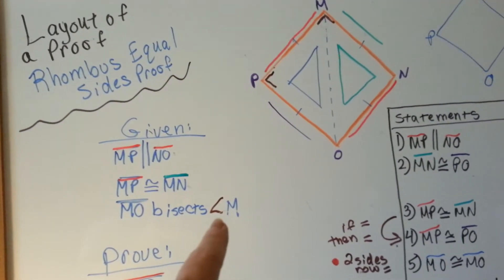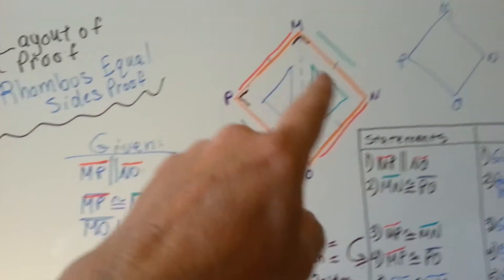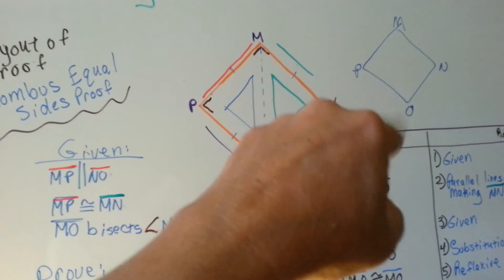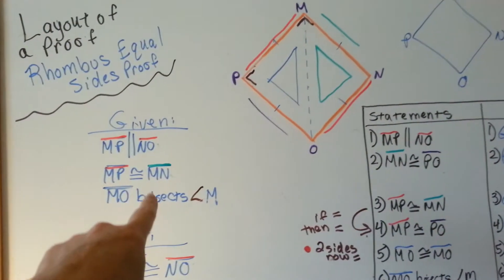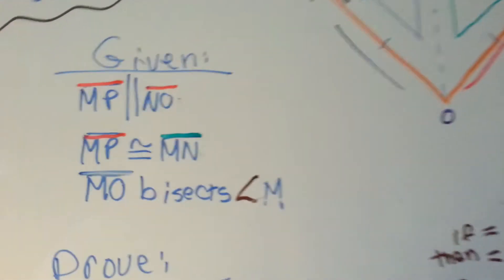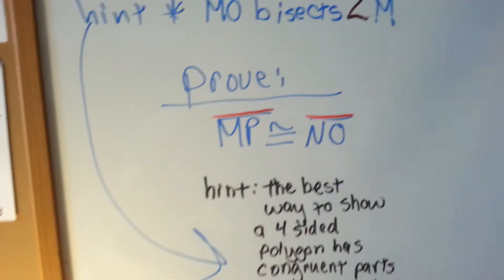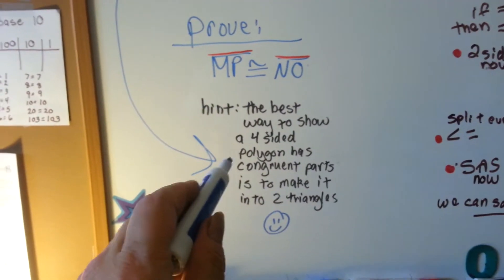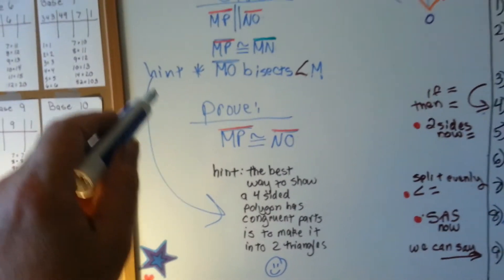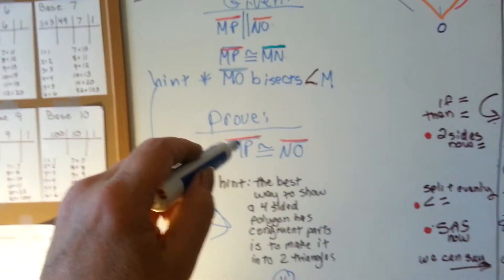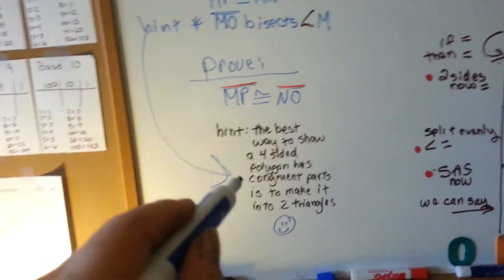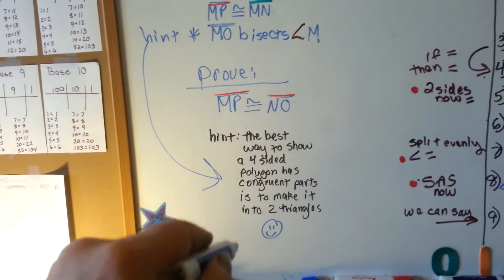MO bisects angle M. So there was no bisector here, but that was a hint right here. This was a hint that we needed to make two triangles. Usually in the given or the prove, there'll be a hint if you need to draw a bisecting line through something.